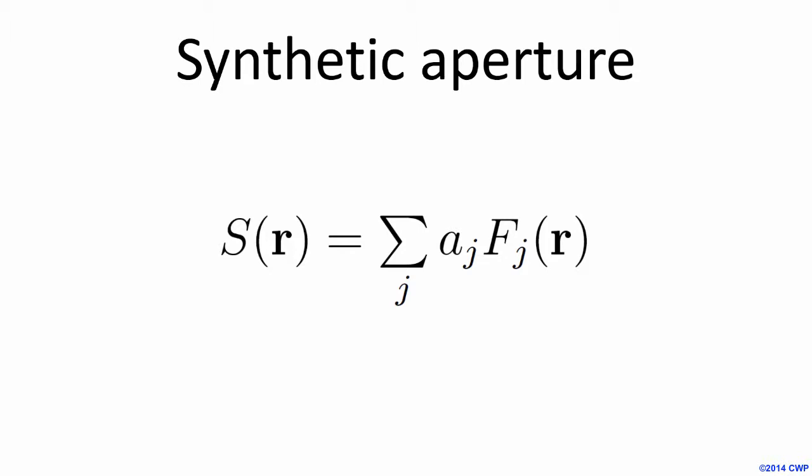The process of synthetic aperture is summarized in this equation. Here, F is any component of the electric or magnetic field for a source J at a receiver location R, at a single frequency. This response is multiplied by a weight, A sub J, and then the weighted responses from the sources in our synthetic aperture array are summed together.